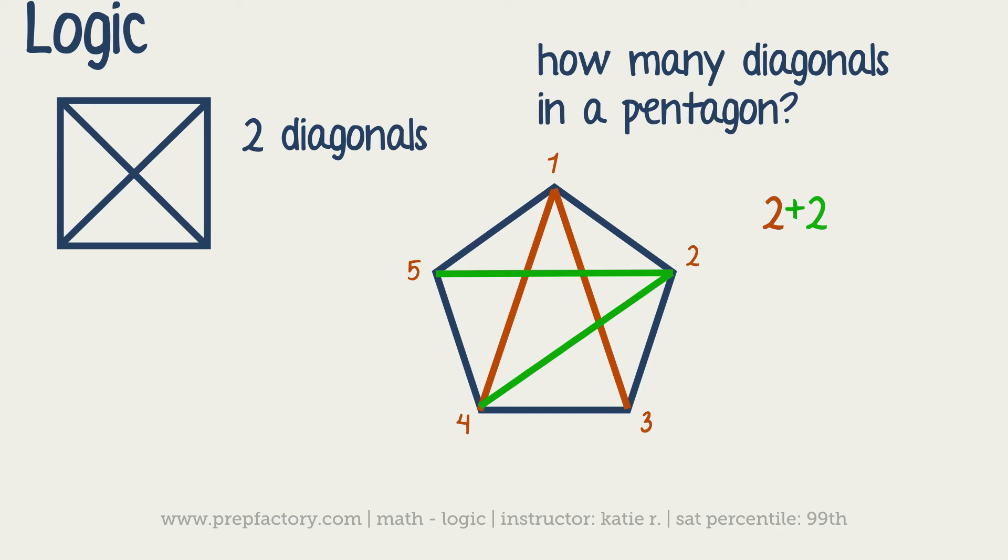This is why I've been drawing these in different colors. Three has already gone to one, so we can't recount that diagonal. We're just going to take three over to five. Then notice four has already been to two and one, and five has already been to three and two. So we just get to add these three up and we've got five total diagonals.